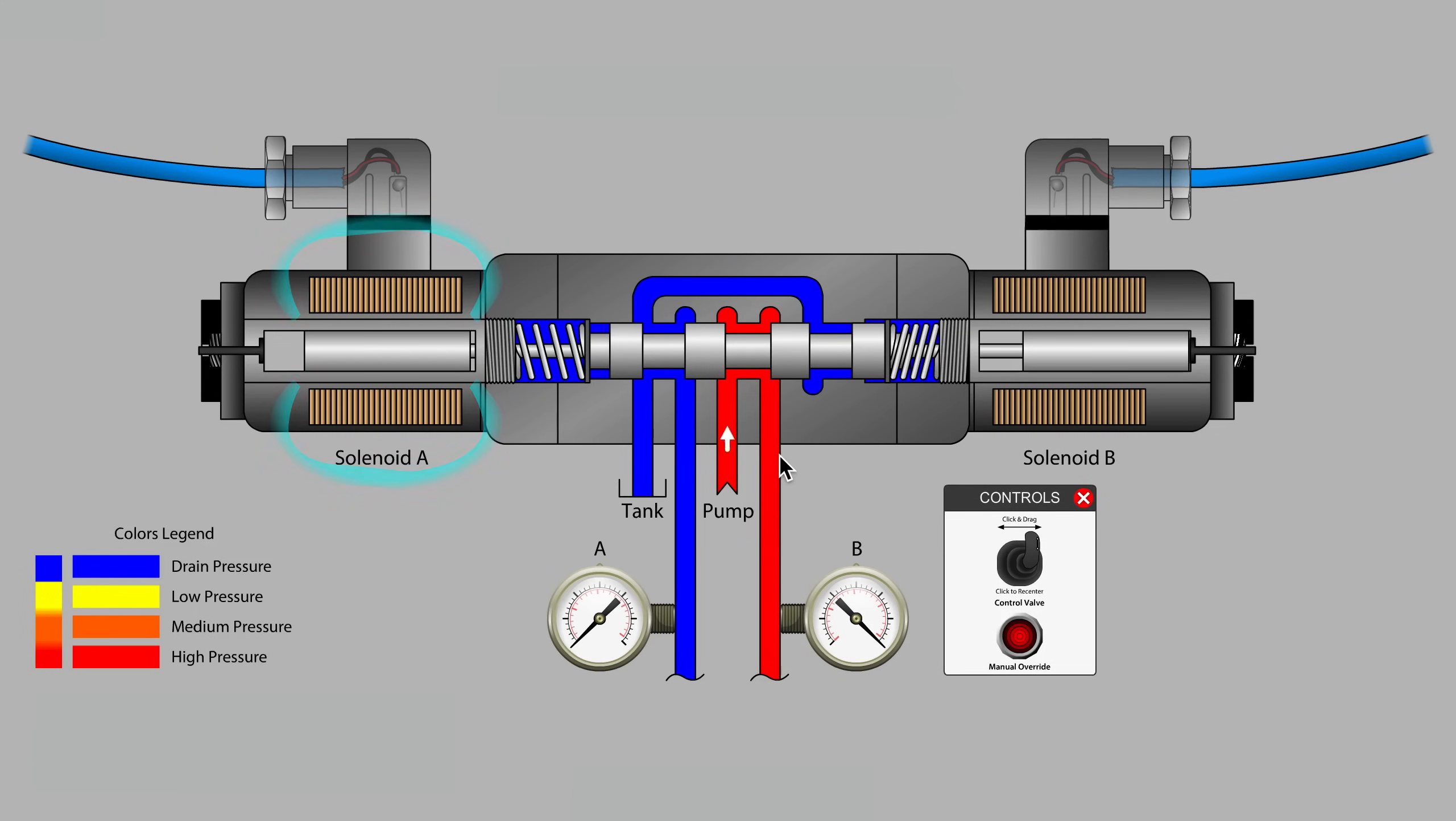Did you notice that as the valve spool moved to the right, that the pushpin and armature in solenoid B were moved to the right as well?